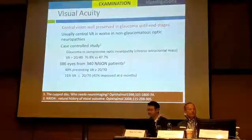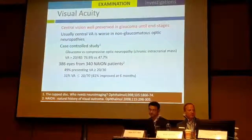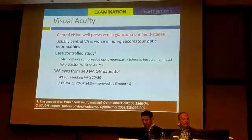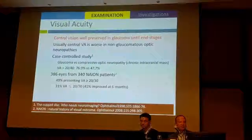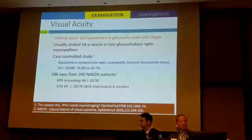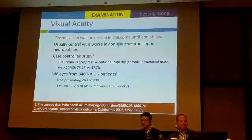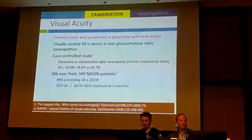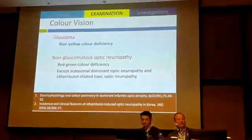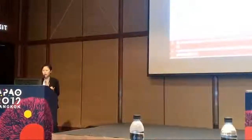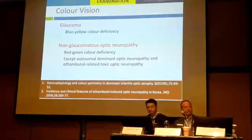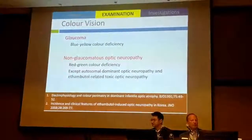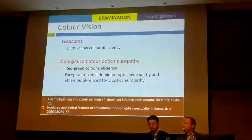In the examination, one of the most important things we check is visual acuity. Central vision is well preserved in glaucoma until the end stages, which distinguishes it from most other types of non-glaucomatous optic neuropathy like compressive optic neuropathy, optic neuritis, or even NAION. Regarding colour vision, most non-glaucomatous optic neuropathies present with a red-green colour deficiency.